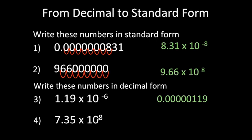Next example: 7.35 times 10 to the power of 8. Since 8 is a positive power, you will have a big number. Starting from 7.35, this is your decimal point, and you move 8 places to the right: 1, 2, 3, 4, 5, 6, 7, and 8. This gives you the decimal representation of that standard form number.